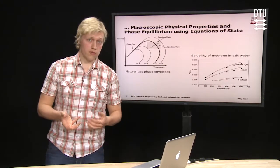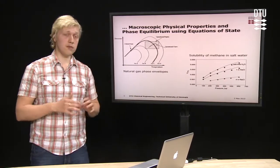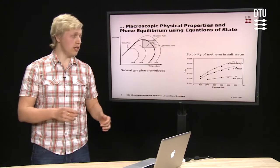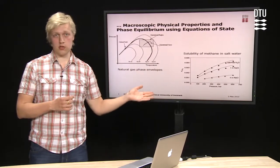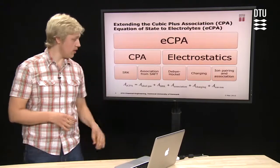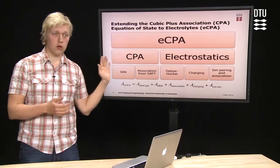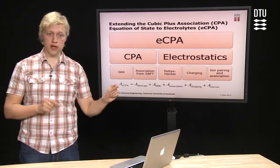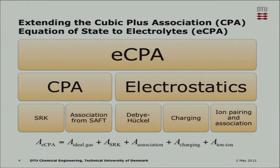One of the most successful models that has been developed at the Center for Energy Resources Engineering is the Cubic Plus Association. Cubic Plus Association takes an existing model called SRK relating the attractive and repulsive forces. It combines it with a term that accounts for hydrogen bonding.